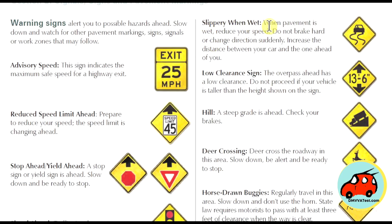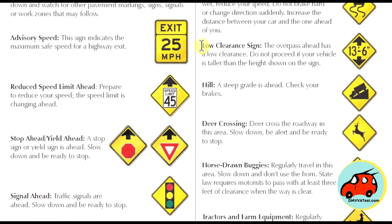Slippery when wet: when the pavement is wet, reduce your speed, do not brake hard or change directions suddenly, and increase the distance between your car and the one ahead. A low clearance sign indicates an overpass with low clearance — do not proceed if your vehicle is taller than the height shown on the sign.